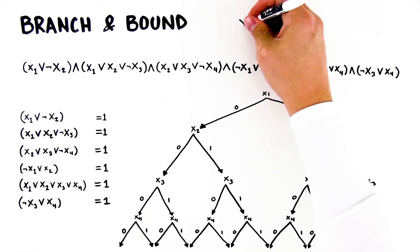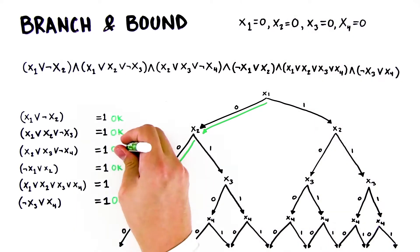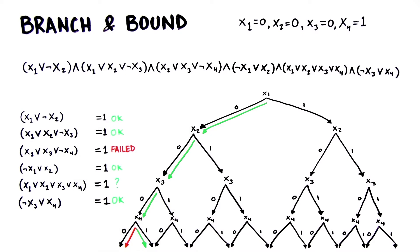We start down the side where x1 equals 0. When we get to x4 equals 0, we find a conflict. We back up the tree and test for x4 equals 1, another conflict. We keep testing sequentially and find conflicts at x3 equals 1 and x2 equals 1.